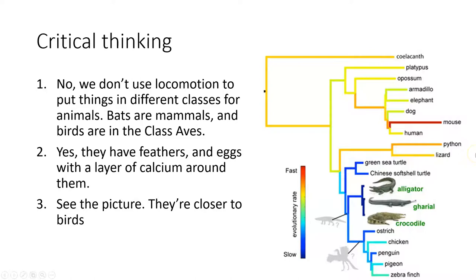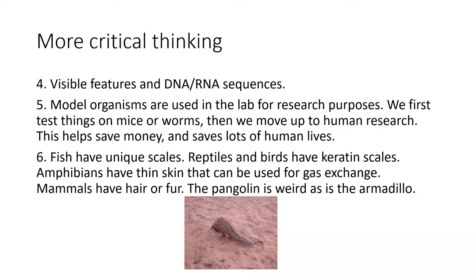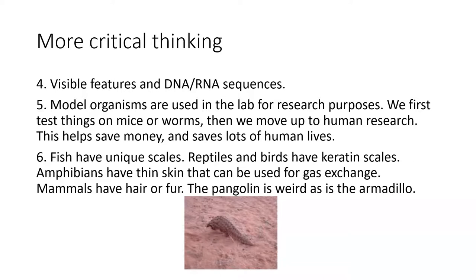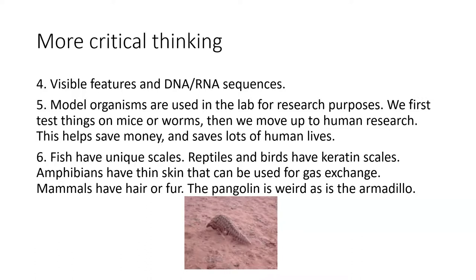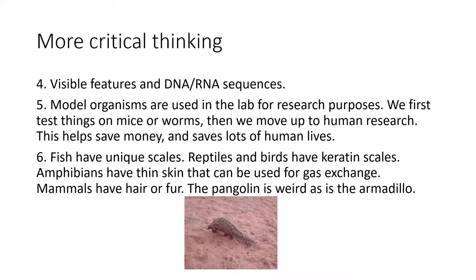What evidence do taxonomists use to classify animals? Nowadays we tend to use DNA evidence, though historically visible features were used. What are model organisms? Model organisms are things used in the lab to study certain biological features — like Gregor Mendel using garden peas for genetics. Today we use Caenorhabditis elegans (a roundworm), fruit flies, mice, and rats as model organisms, because we can't test everything directly on humans.